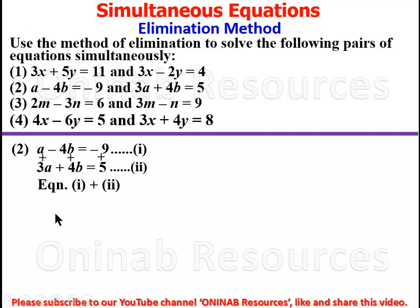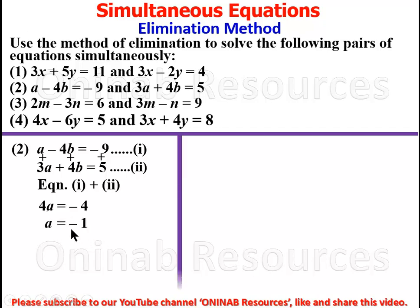A plus 3a gives 4a. Negative 4b plus 4b gives 0. Negative 9 plus 5 gives negative 4. Dividing both sides by 4, we have a equal to negative 1. We have gotten the value of variable a.